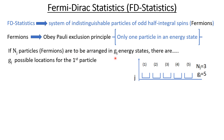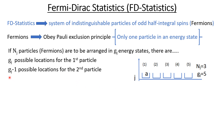You have to arrange them in gj energy states. So for the first particle there will be gj possible locations. For example, in this system, let's suppose we have five energy states and we have to put three particles in these five energy states. For the first particle I have five positions and I can put the first particle anywhere among these empty positions — so for example I put the first particle at position one.